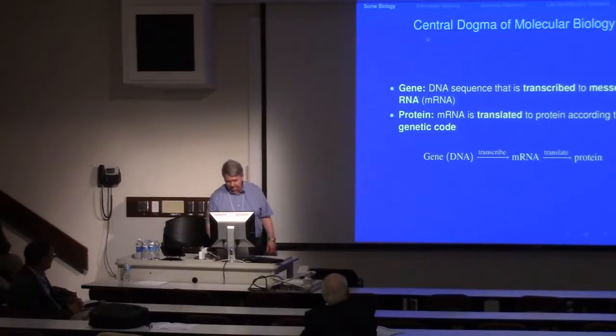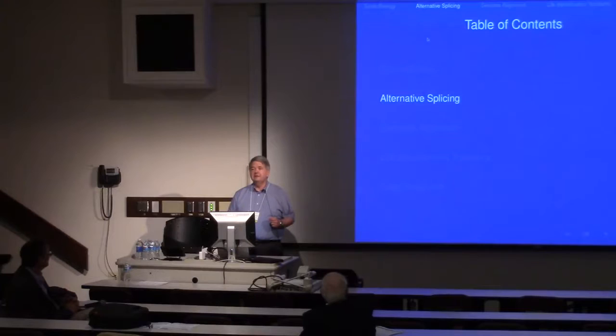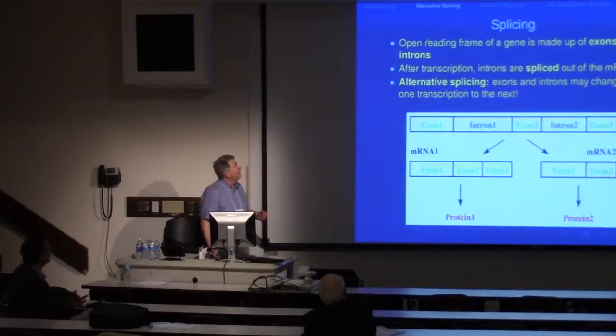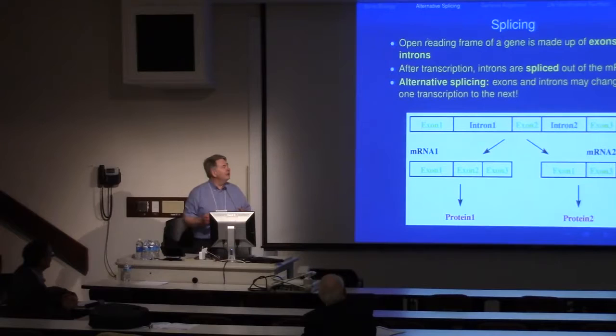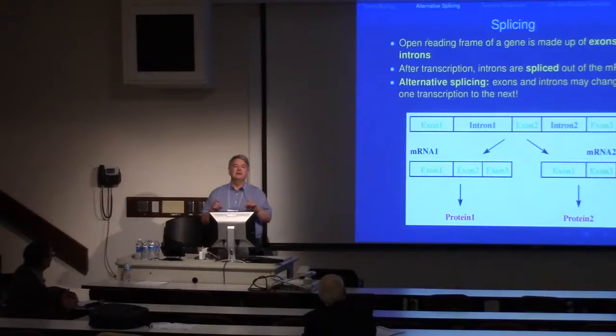The first topic I want to talk about is alternative splicing. In higher organisms, the gene has a certain structure — it has exons and introns. The exons are the portions of the open reading frame that are retained, and the introns are the parts that are spliced out. It turns out this picture is not definite: there are alternative ways of splicing the same open reading frame.